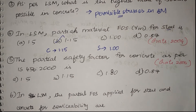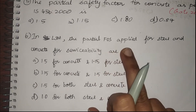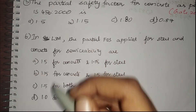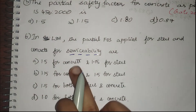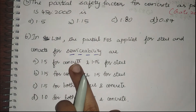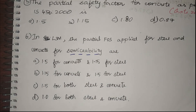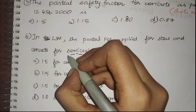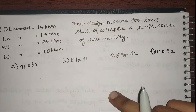The next question asks: in limit state method, what are the partial safety factors for steel and concrete for serviceability? Underline and give importance to the word 'serviceability' — don't blindly answer for collapse, because most of the time we only consider collapse. Remember, this has been specifically asked for serviceability. Comment your answers below — I'm sure you know the answer.